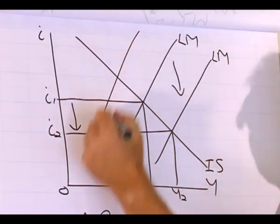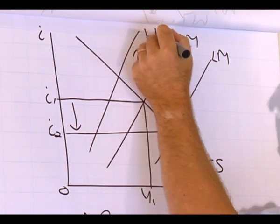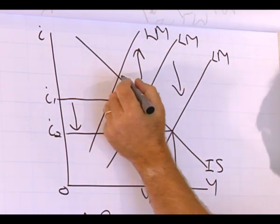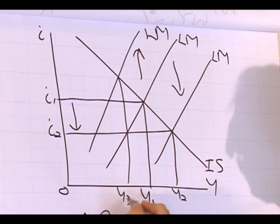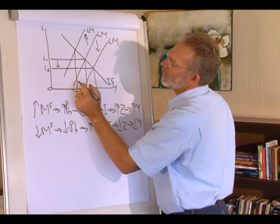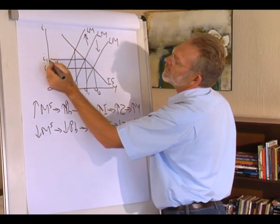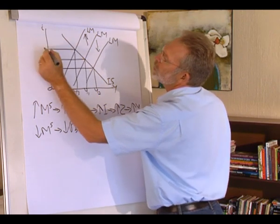Graphically we can show this by an upward shift of the LM curve. The output level decreases to Y3 and the interest rate increases from I1 to I3.